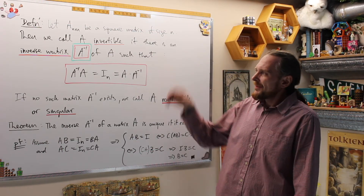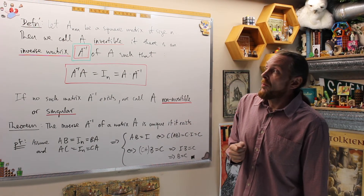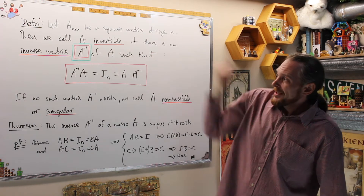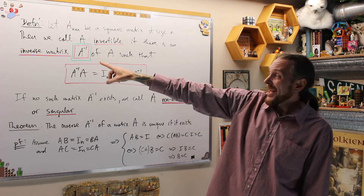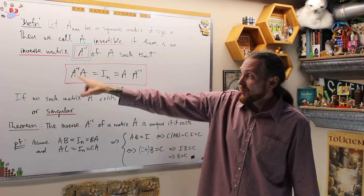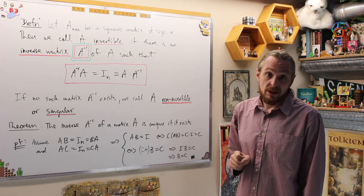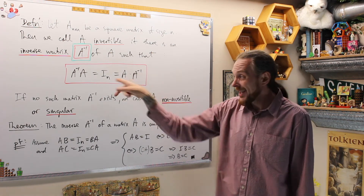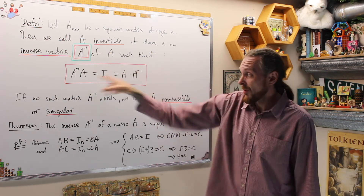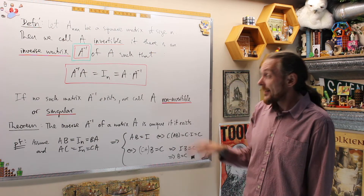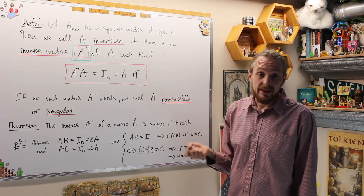To finish off this video, we'll give the definition of an inverse of a matrix, and then give the first result about inverse matrices. The definition: given a square n by n matrix, we call A invertible if there is an inverse matrix, denoted A^{-1}, such that A^{-1} times A equals the identity, and that also equals A times A^{-1}. We don't know about commutativity, so we have to check both sides. If no such matrix exists, we call A non-invertible, or singular.